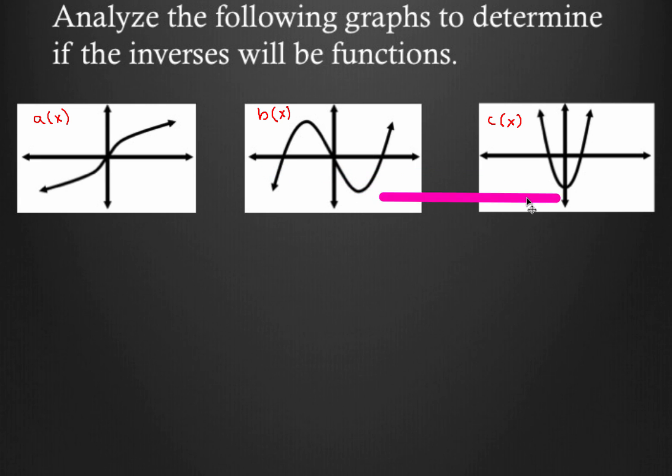And let's move over here to c of x. Check this out again. As I move this vertically down here at the bottom, maybe I only intersect the graph once. But as I slide this further up the function, it intersects it twice.